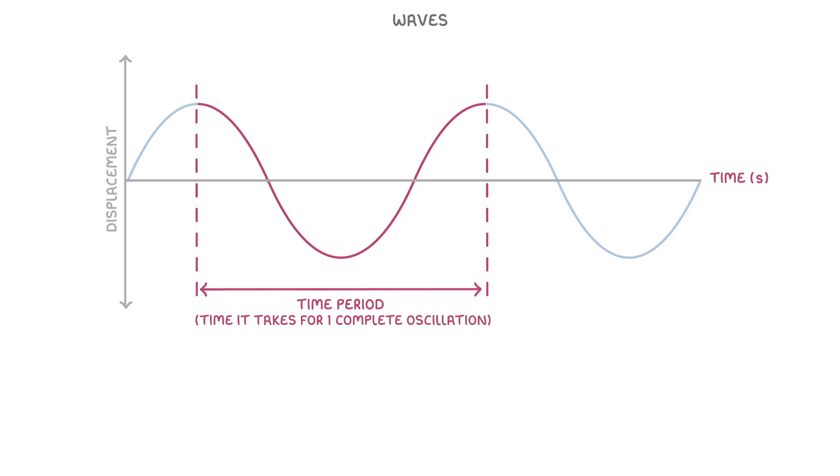The benefit of knowing the time period is that we can then use this equation here to work out frequency, which is measured in hertz and is the number of complete oscillations per second. To see how it works, imagine that each oscillation takes 0.5 seconds. Or in other words, the time period is 0.5 seconds. This means that there must be a total of two oscillations per second. So the frequency is 2. Which is what we'd get if we did 1 divided by the time period of 0.5.